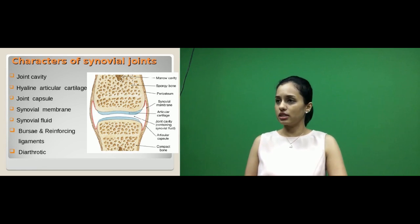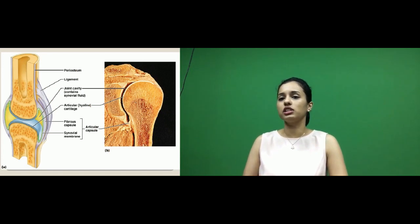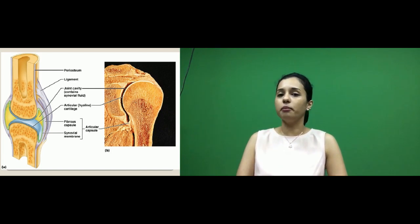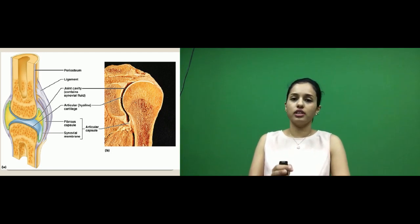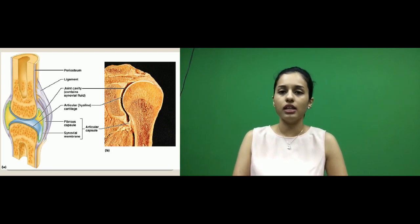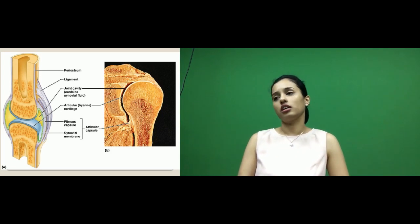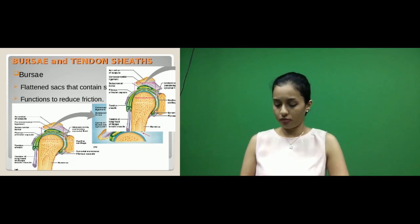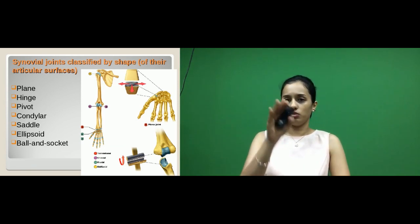Since synovial joints come under diarthrosis, they are freely movable. The picture shows all the features: a joint space, a joint capsule, ligaments, a green lining representing the synovial membrane on the inner aspect of the joint capsule, and the bluish margins lining the bony surfaces representing articular cartilage. The pockets filled with synovial fluid mainly function to reduce friction.